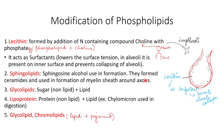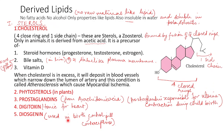The second type of modified phospholipid is sphingolipid, in which sphingosine alcohol is used. These form ceramide and are used in the formation of the myelin sheath around axons. The third type is glycolipid — sugar plus lipid. The fourth is lipoprotein — protein plus lipid. All of these are types of modified phospholipids or conjugated lipids.